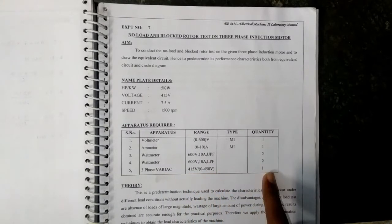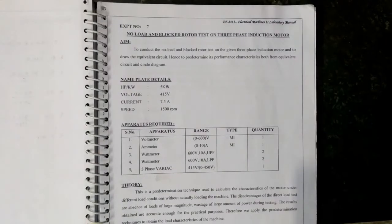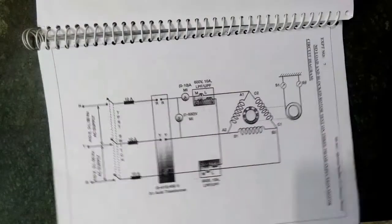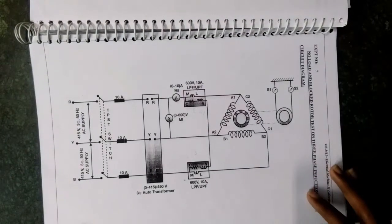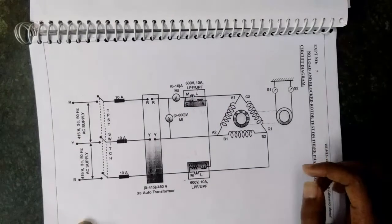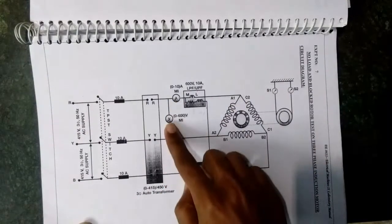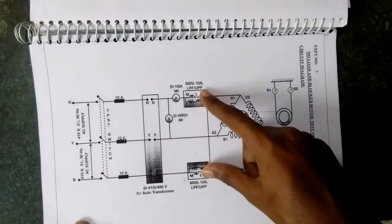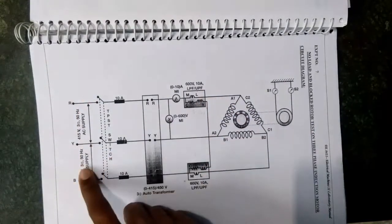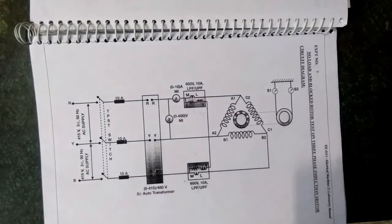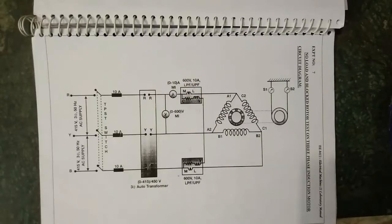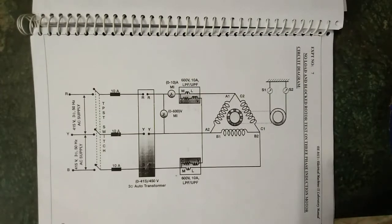The circuit diagram for this experiment is this one. Here we connect a three-phase auto transformer, ammeter, voltmeter, and two wattmeters. We give a three-phase power supply.